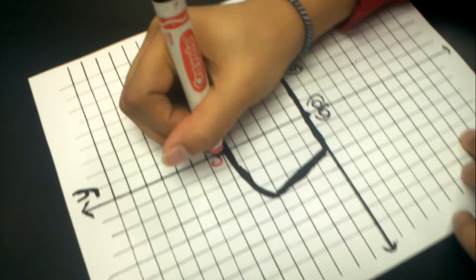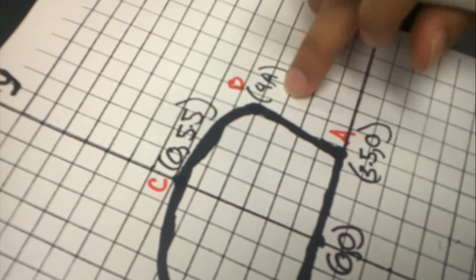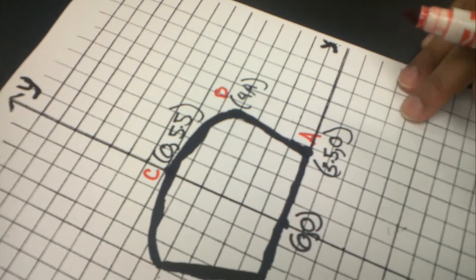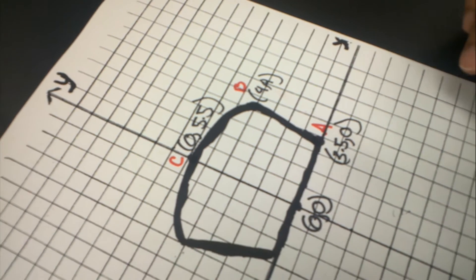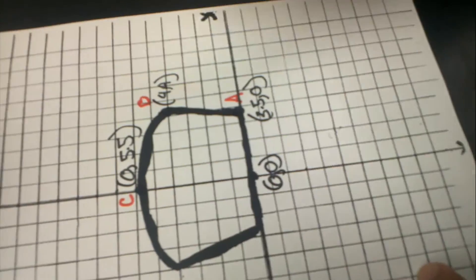This is going to be point A, point B, and this will be point C. Now if you look closely, there's this line segment and this parabola. We need to find the equation for each one of these lines.